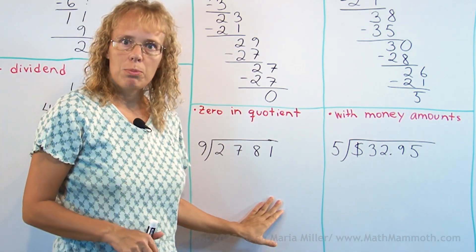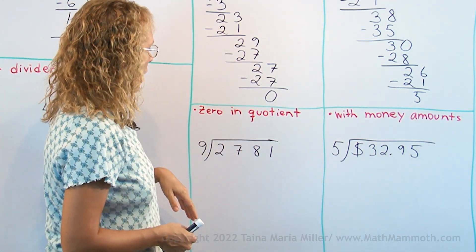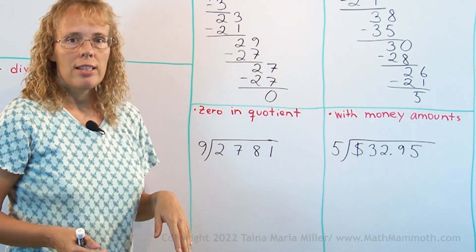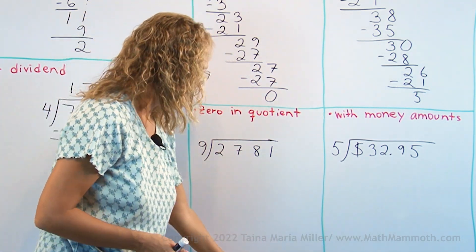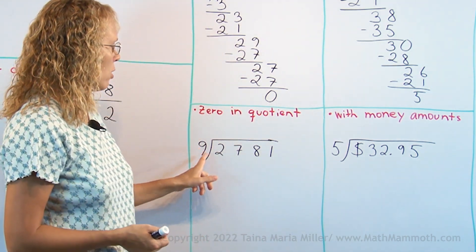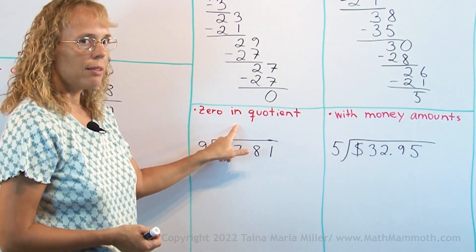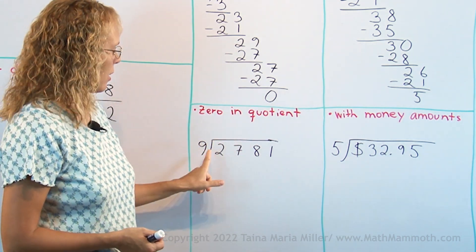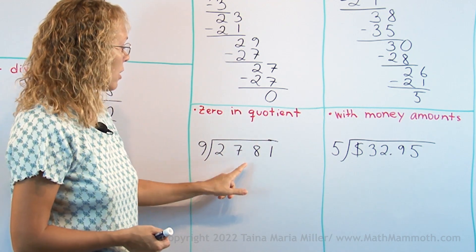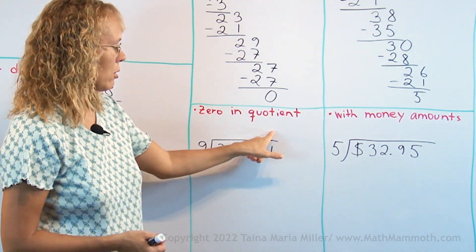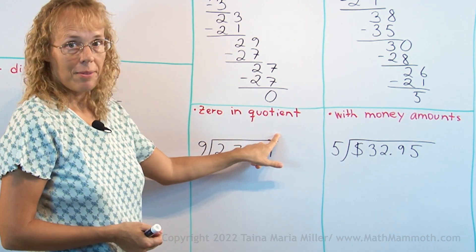This is a special situation because we're going to get a zero in the quotient. I could actually divide this without going through the full process because I can think this way: 9 goes into 27 three times, put 3 right here. Then 9 goes into 8 zero times, but 9 goes evenly into 81 nine times. So there's going to be 3, 0, and 9.